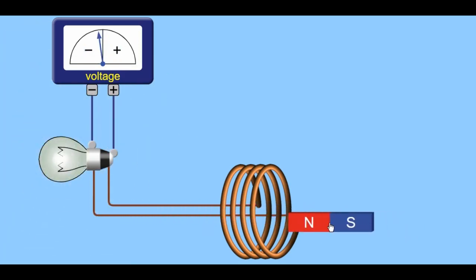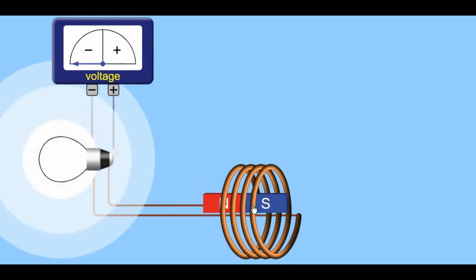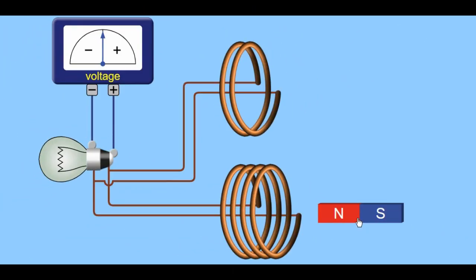Looking at the magnet moving in the coil, as the field lines, the magnetic field lines, cut through the coil of wire, a current is generated. The faster the magnet moves, the greater the current induced.